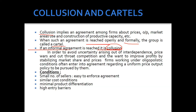The conditions are: a small number of sellers, making the agreement easier to enforce — as we studied in oligopoly, there are few sellers and a large number of buyers. Similar cost conditions, meaning both companies face similar costs. Minimal product differentiation, meaning the products are very close to each other with very few differentiating characteristics. And high entry barriers, meaning it is not easy to enter the market — only those companies with the required licenses can enter.